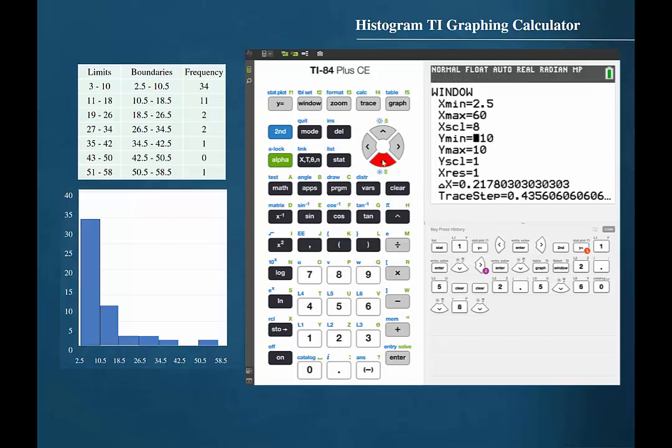Now cursor down to the minimum Y value and set that to 0. Cursor down to the Y maximum value and make sure that the value is greater than the largest frequency in the grouped frequency distribution. The largest frequency in this grouped frequency distribution appears in the first class and is 34. We will set the maximum Y value to 40 again to ensure that the entire histogram appears on the screen.